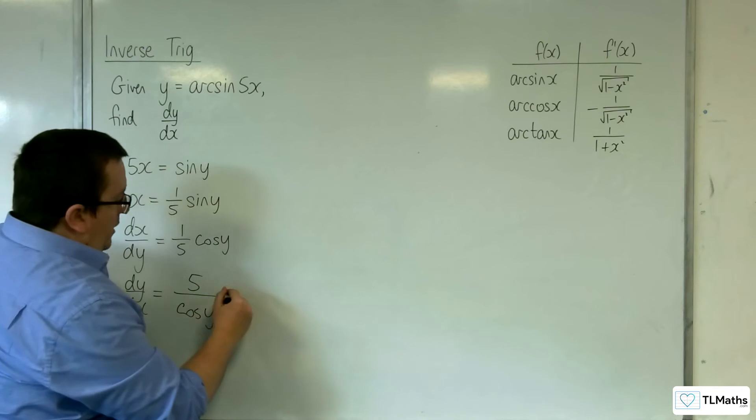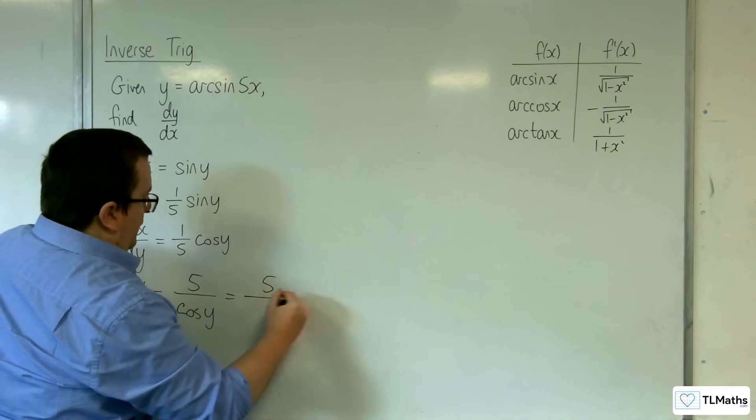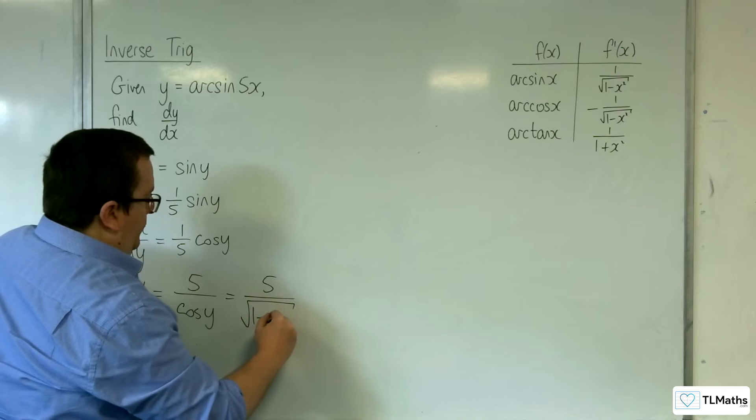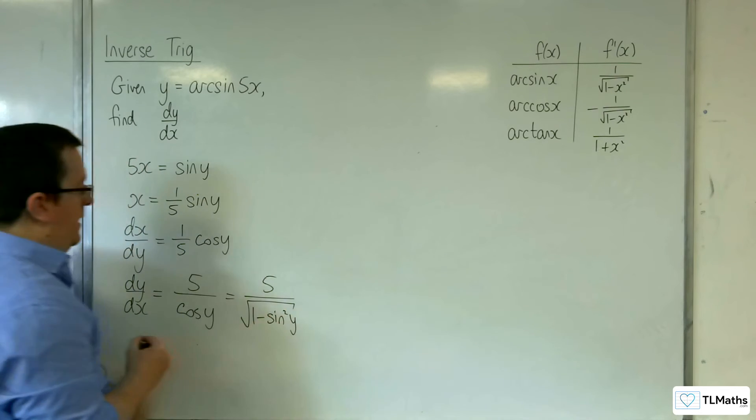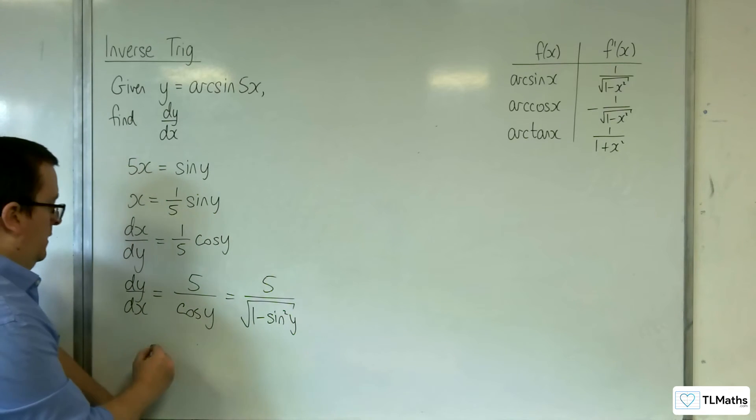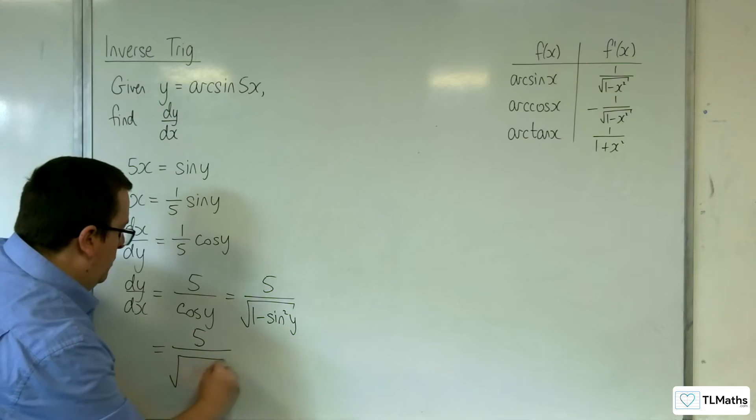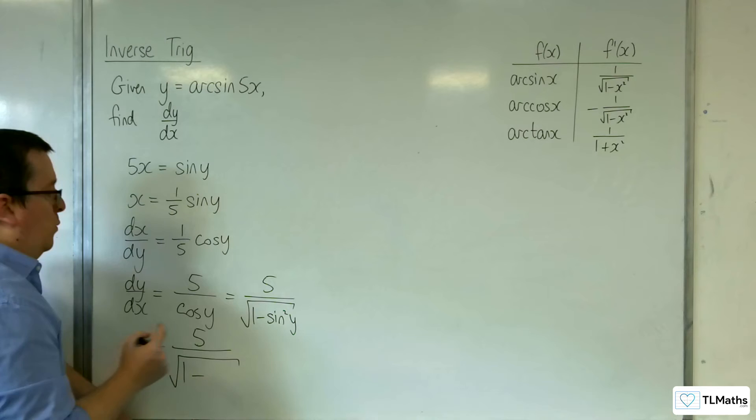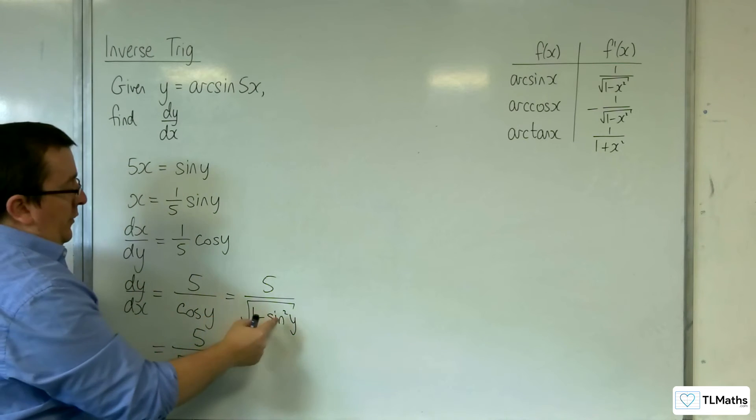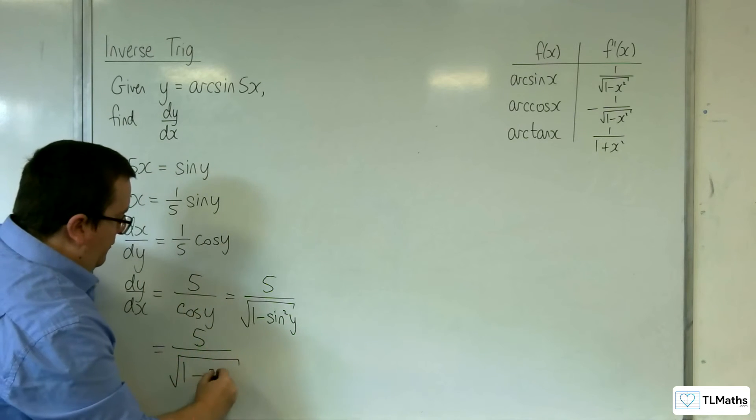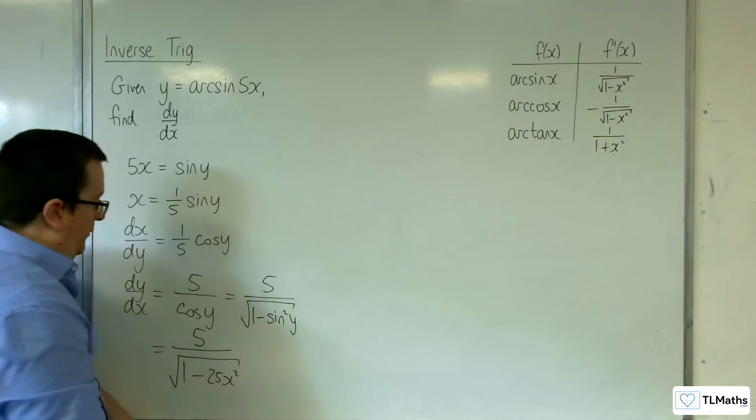Now this we can write as 5 over the square root of 1 minus sine squared y, which is equal to 5 over the square root of 1 take away. Now the sine y, remember, is 5x. So 5x all squared, so 25x squared.